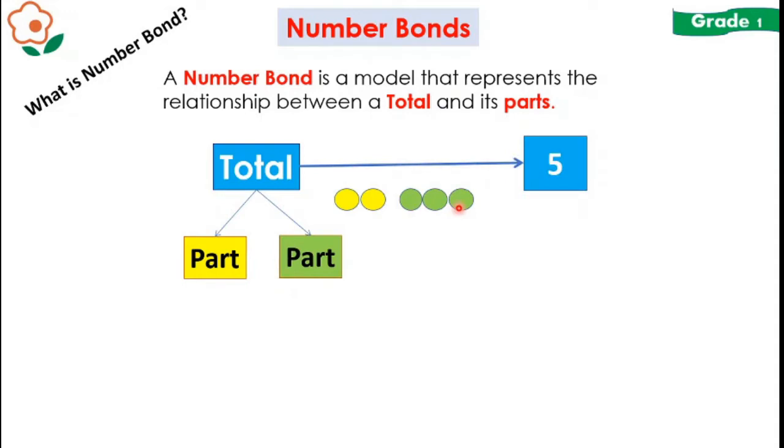And how many yellow dots are there? There are two yellow dots. And how many green dots are there? There are 1, 2, 3. Three green dots.